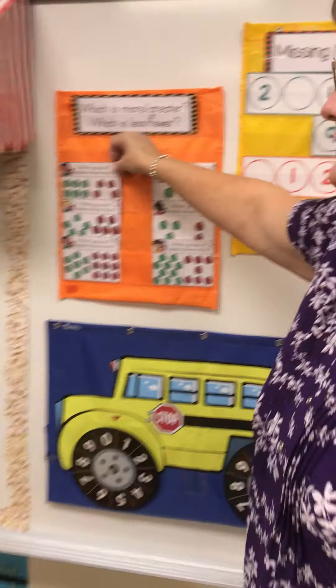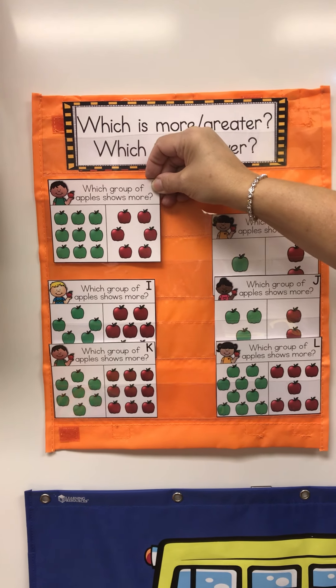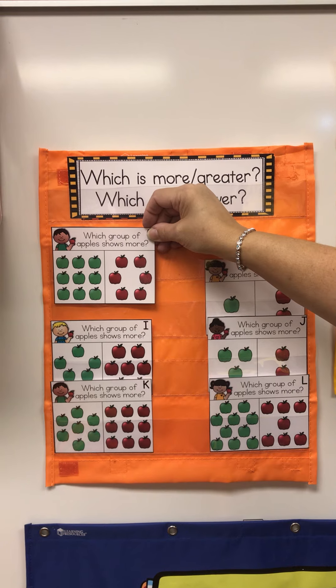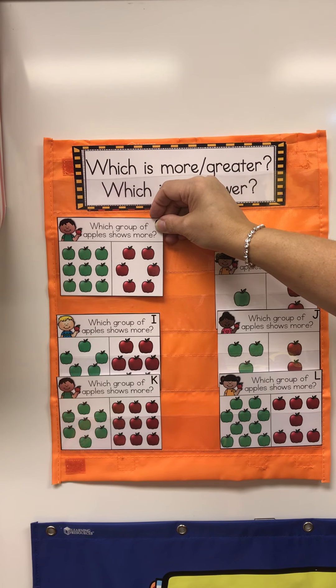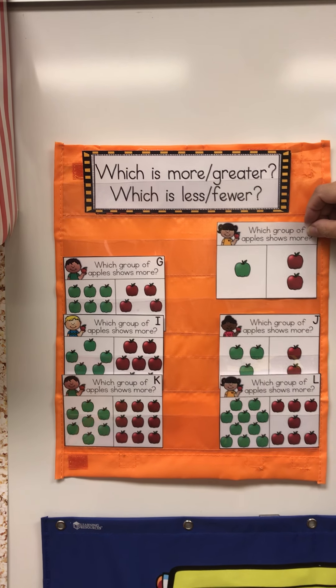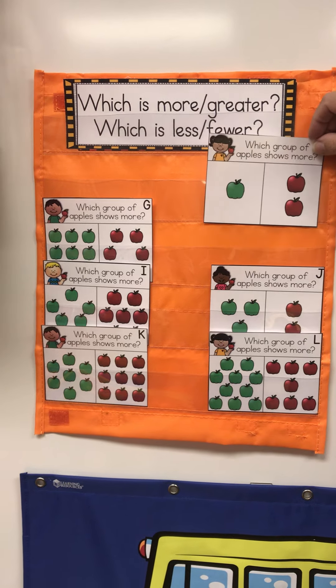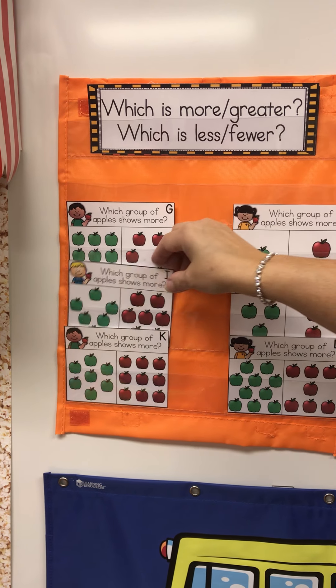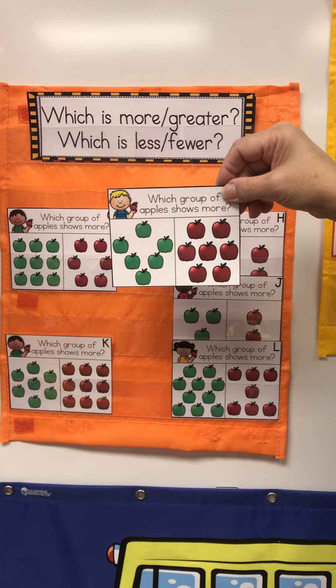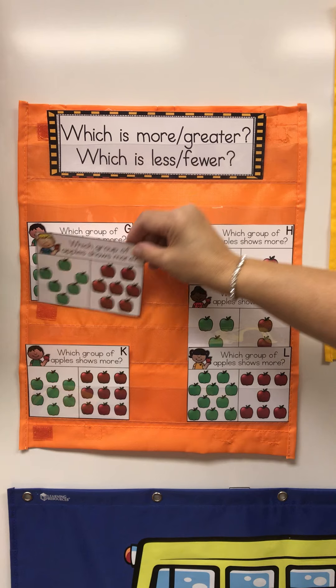Which group is greater, green or red? Greater means more. Did you say green? If you did, you were right. Which group is greater, green or red? Red. Which group is greater, green or red? Oh, you might have to count those. Red is greater.